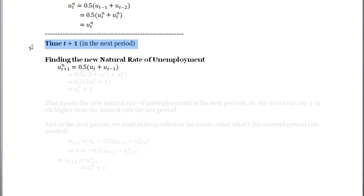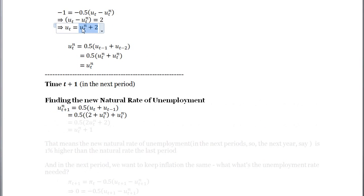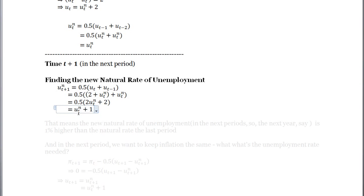Now let's go to time T+1. The new natural rate of unemployment at T+1 is the average of the previous two unemployment rates: unemployment at T was the natural rate plus 2, and unemployment at T−1 was just the initial natural rate. Averaging those, the new natural rate of unemployment is the initial natural rate plus one percentage point — a big deviation from past models where the natural rate was always constant.